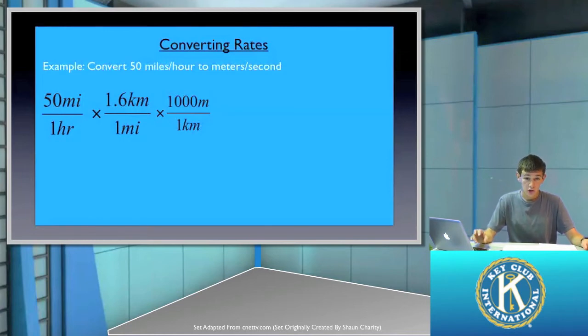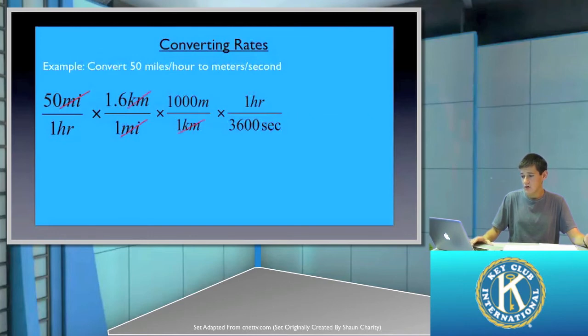So now we have to focus on our time. We start with hours, and we know that in one hour there are 3,600 seconds. Now, keep in mind, even though that hours are not on the bottom, that's fine because what ultimately happens is since hours are diagonal from each other in the scheme here, what will happen is they'll end up canceling out. So going back, we cancel out common units. So miles cancel out. Kilometers cancel out, leaving us with our distance of meters. Likewise, with time, hours also cancel out, leaving us with our time of seconds.